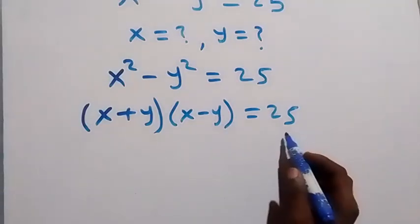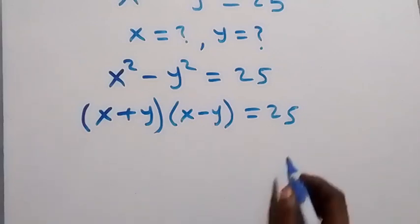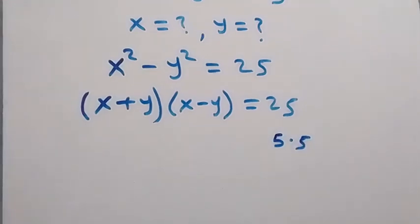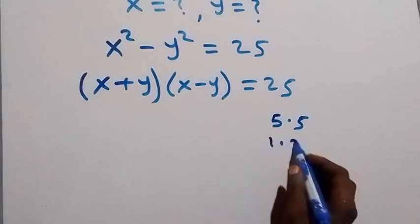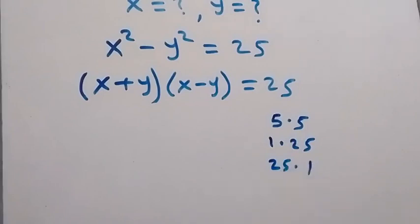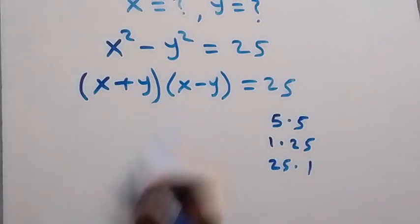Then we can split the 25 on this side. The possible ways we can separate these 25 are: we can write this as 5 times 5, or we can write this as 1 times 25, or we can write this as 25 times 1.